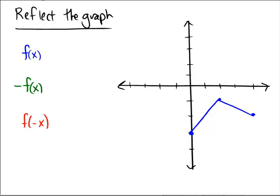So negative f of x, the one I'm going to draw in green, is going to be a reflection over the y axis. Sorry, oh no, I made the y negative, so this will be a reflection over the x axis.